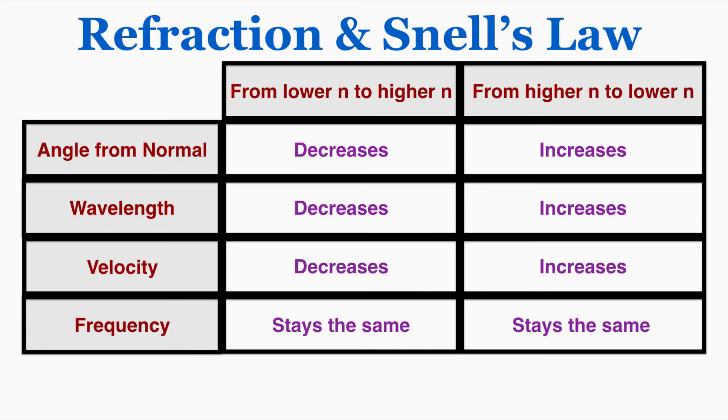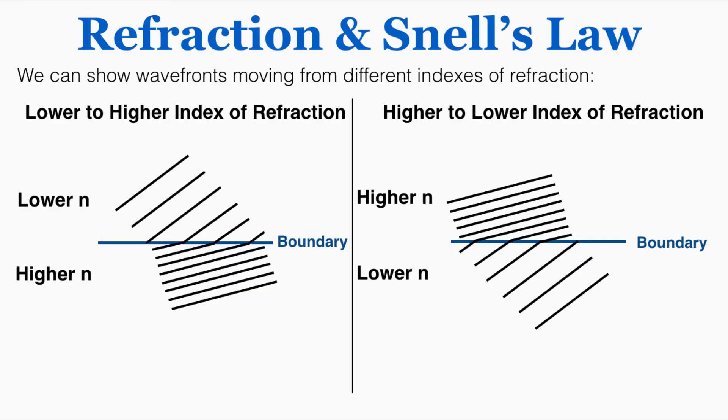So these are the rules for when light goes from a lower to a higher index of refraction and when it goes from higher to lower. You can see how the angle from the normal is affected, how the wavelength velocity and frequency are also affected. We can also show wave fronts moving from different indexes of refraction, and you'll notice that here the wavelength decreases and here the wavelength increases.